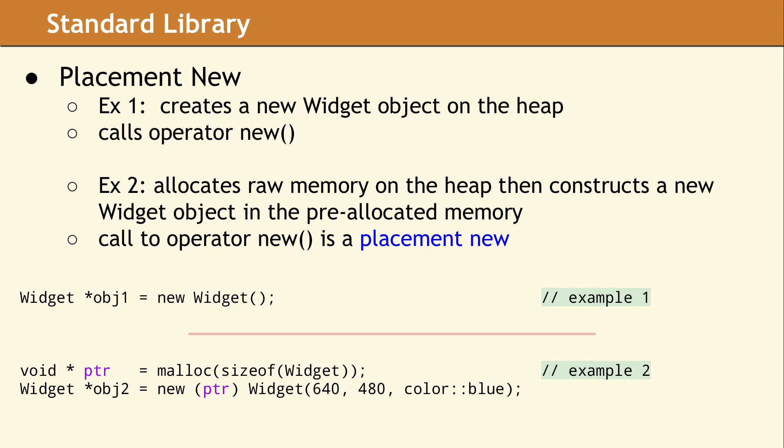One of the most common use cases for placement new is when implementing containers. Since every implementation of the standard library will provide containers like STD vector, seeing a placement new in their code is reasonable. Calling placement new in a user application should be used with caution and is often unnecessary.